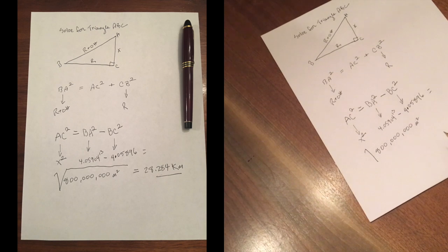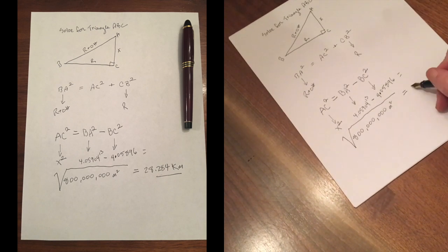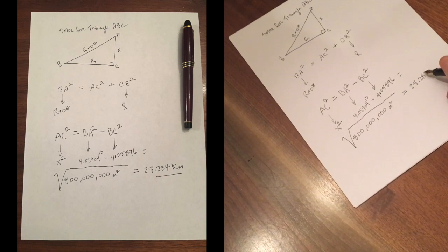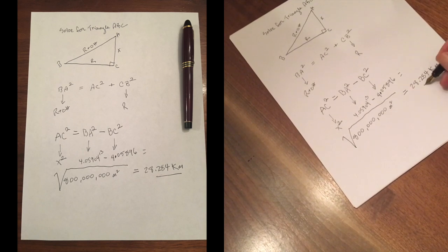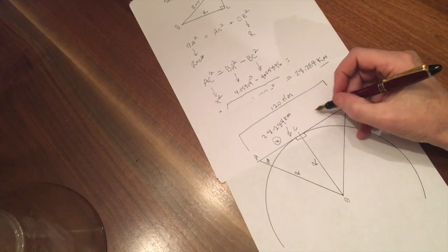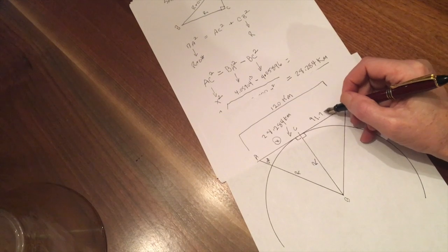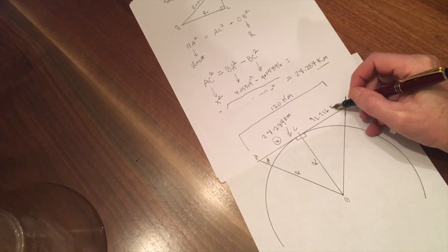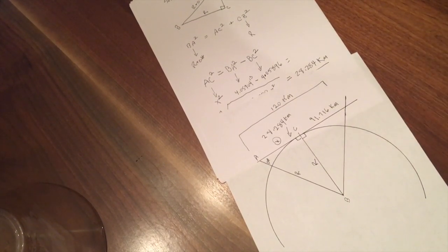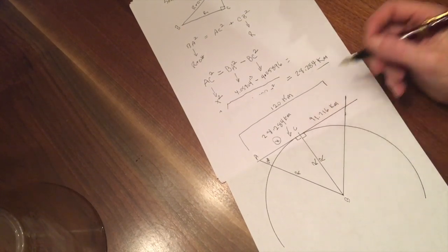For this problem, we used an observer elevation of 60 meters, and we used a distance to target of 120 kilometers. Having solved for our distance to the horizon from our observation point being 28.284 kilometers, we now know that from our horizon to our target it is 91.716 kilometers.